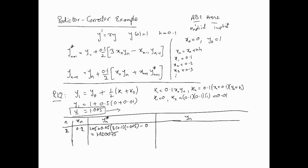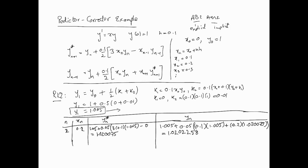Now we apply the corrector (AM2) using the predicted value y2* = 1.020075. Plugging into the corrector formula gives the improved corrected value y2 = 1.0202258. So for each step, we compute the predictor first, then apply the corrector — that's the predictor-corrector cycle.